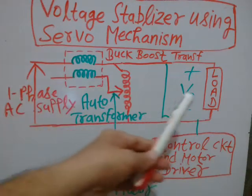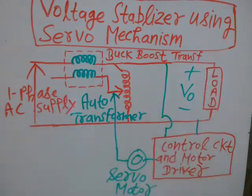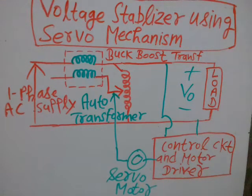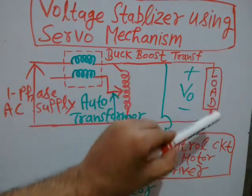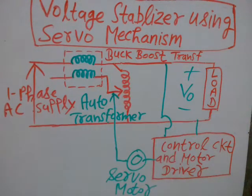All electrical appliances and power system appliances operate satisfactorily only at their rated voltage. If they are operated at a fixed voltage, only then they will get the best performance. So the voltage across the load terminals should not fluctuate.